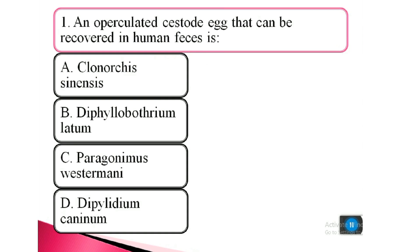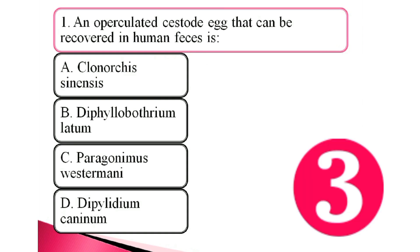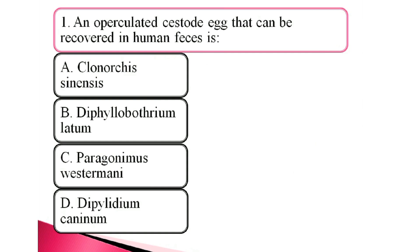Question 1. An operculate egg that can be recovered in human feces is: a. Clonorchis sinensis, b. Diphyllobothrium latum, c. Paragonimus westermani, d. Dipylidium caninum. The answer is b. Diphyllobothrium latum.